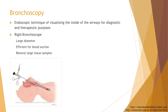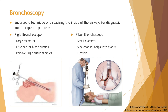There are mainly two types of bronchoscopes. The first one is a rigid bronchoscope. It has a relatively large diameter and is efficient for blood suction and good for removal of large tissue samples. The other one is a flexible fiber bronchoscope. It has a much smaller diameter, and the side channels help with biopsy. The biggest advantage is it's very flexible and introduces much less pain to the patient.